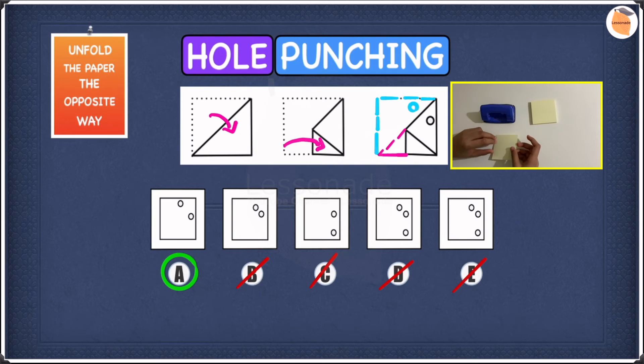Now let's check if A is right by folding and punching the paper. Now let's take a paper, and we're going to do the first fold, which is to fold the paper along its diagonal line. So into half along its diagonal line.